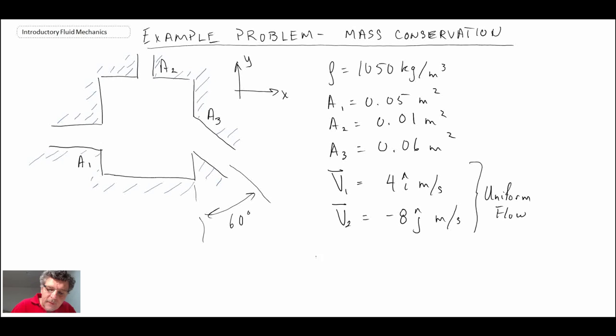So we're given that information and we are told to find v3, which is the velocity at area 3. So that is the unknown for the problem. The control volume is specified here, the control volume is basically right around the box or the mixing chamber that we're looking at. So that is the control volume for the problem that we're dealing with.